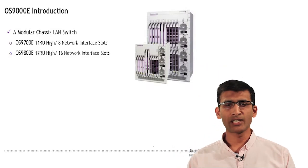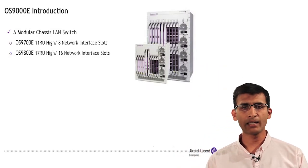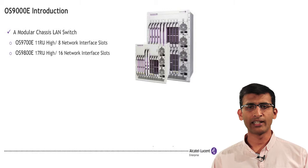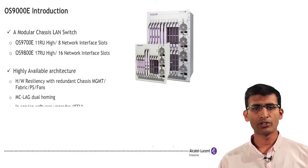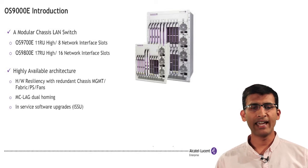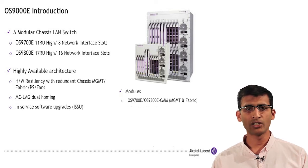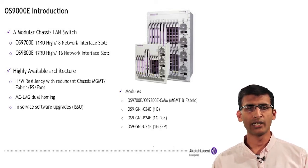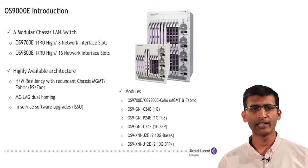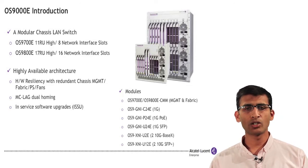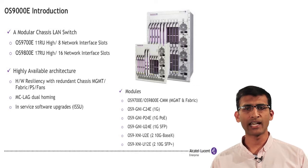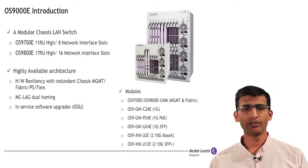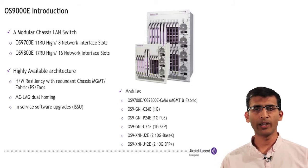The OmniSwitch 9000E chassis is a high capacity modular LAN switch that addresses mid to large enterprise network needs for secure and highly available edge distribution core layers to support converged solutions including voice, video and data. It is also ideal for use in metro ethernet environments because it is designed for deployments requiring rapid convergence, stacked VLANs with end to end visibility and OAM controls.